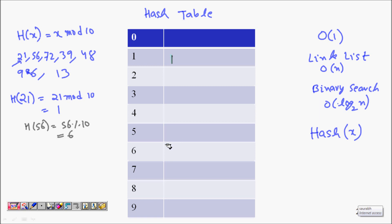We will have H(72) equals 2, so it will come here. Then we will have H(39) is 9, so it will come here. And H(48) will be 48 modulo 10, so it will be 8. So 48 will come here.